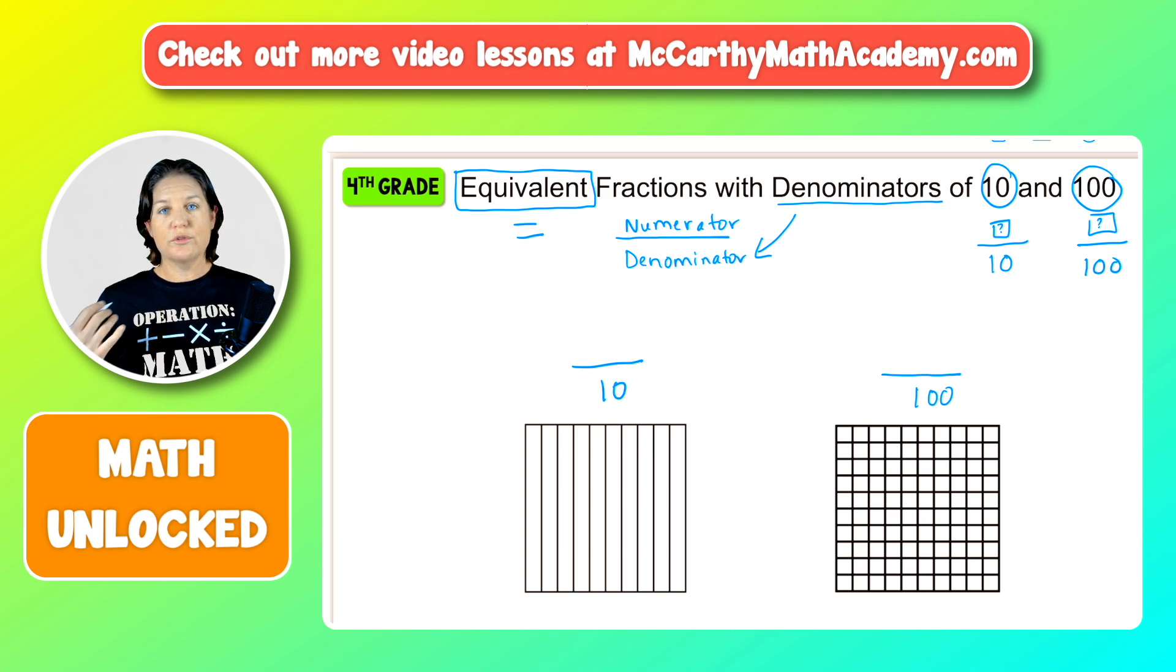Now I'm going to create the numerator for our tenths. Let's see, what do I want to put there? Let's say three. So you see that number on top? That's called the numerator. It describes the amount that is being considered. It's the part that is being shaded. It's the part that we're considering here. And we would read this fraction as three tenths. And what we're trying to figure out is what would be the equivalent fraction? How many hundredths would it take to be equal to three tenths?